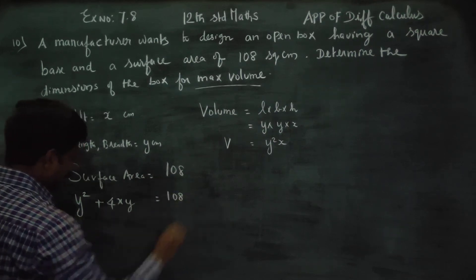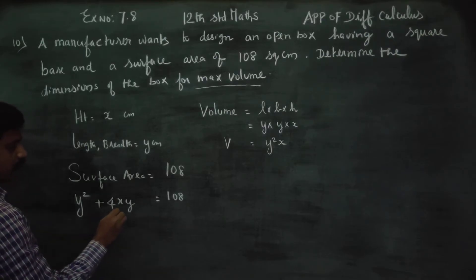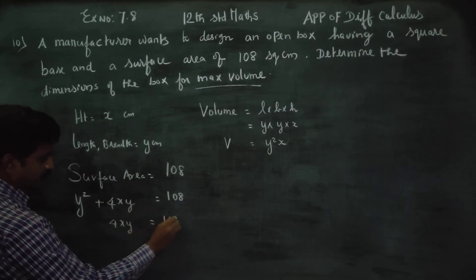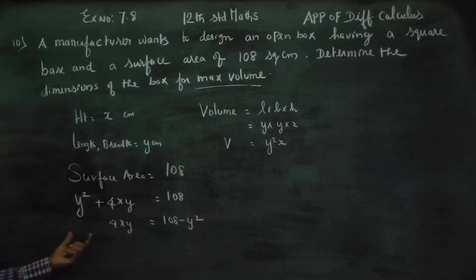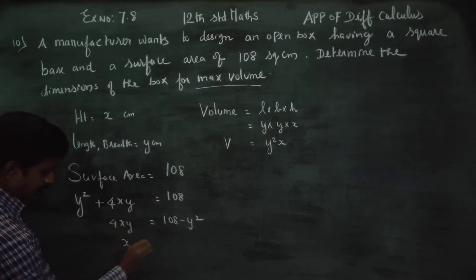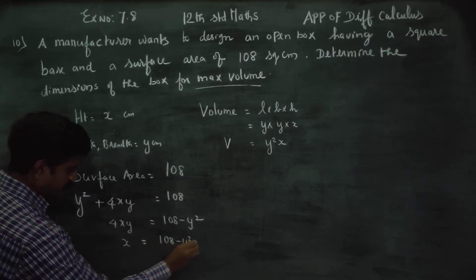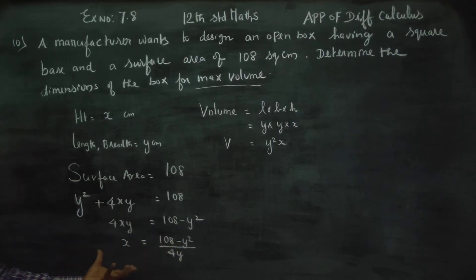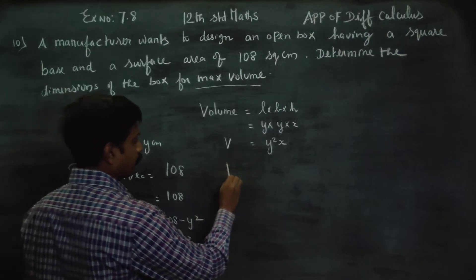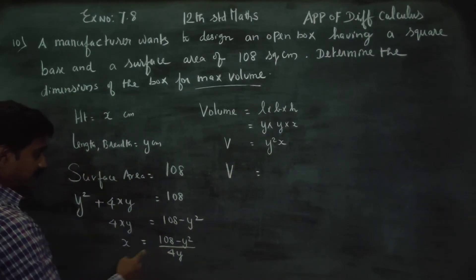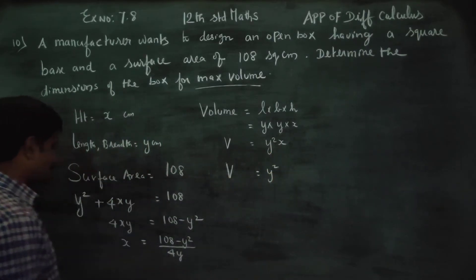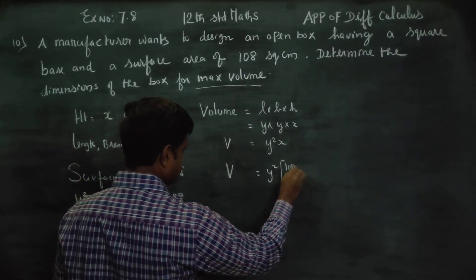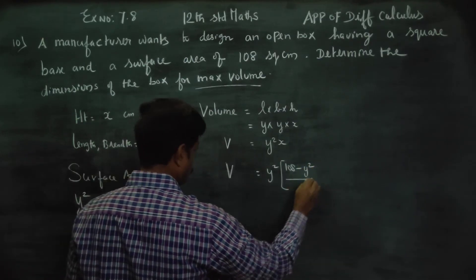This surface area is equal to 108. Converting to express x in terms of y: 4xy = 108 minus y squared. Therefore, x is equal to (108 minus y squared) divided by 4y.